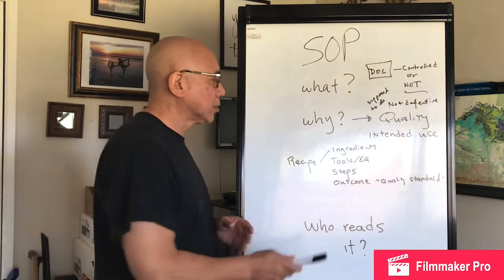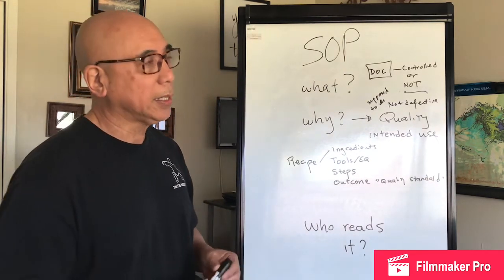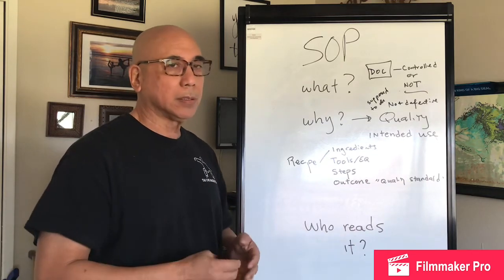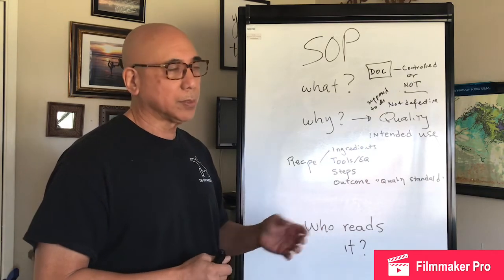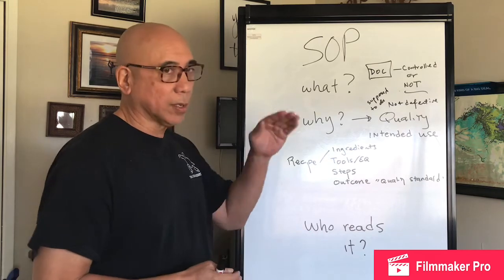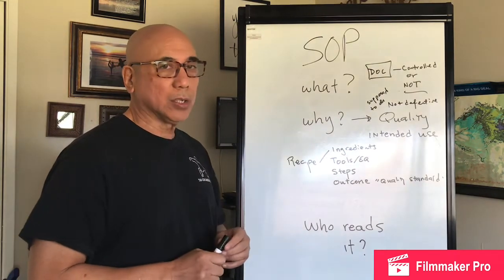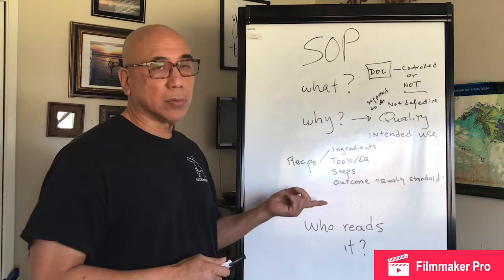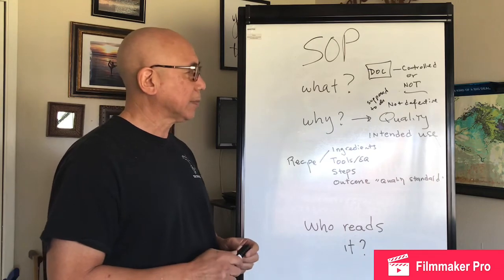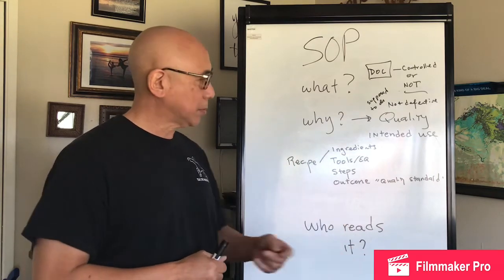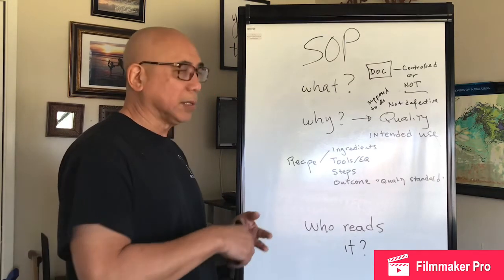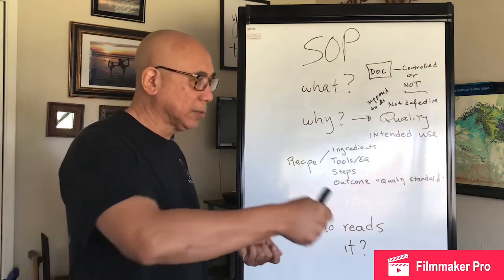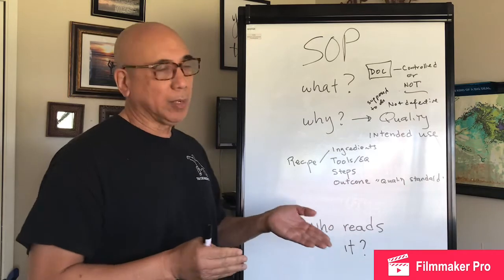What does an SOP consist of? I like to use the recipe analogy. As you know, if you baked cakes, barbecued ribs, or made a pot of rice, you follow certain steps. A recipe has basic sections: it has the ingredients — in a manufacturing shop, that would represent the raw materials. It would also talk about the types of tools and equipment, like an oven, knives, spoons, measuring spoons — and in manufacturing, that would be your lathe, cutting tools, and wrenches.